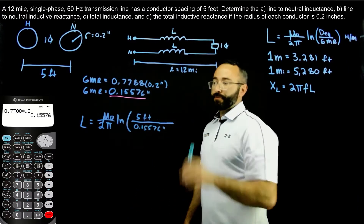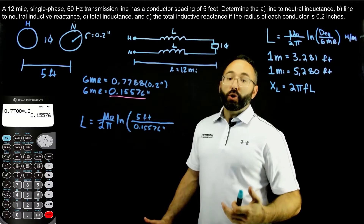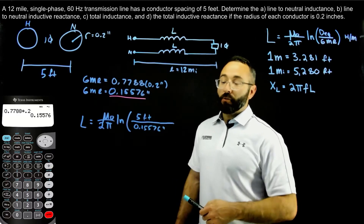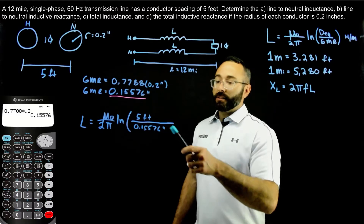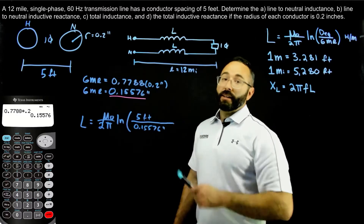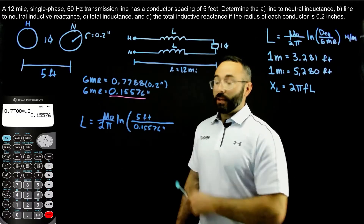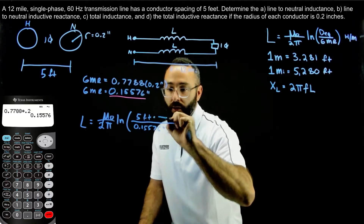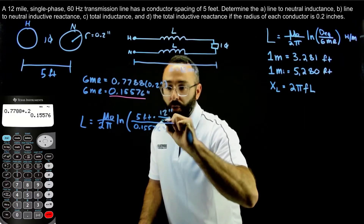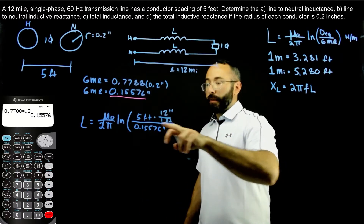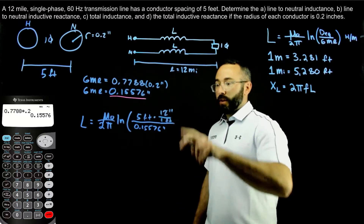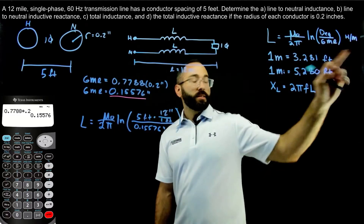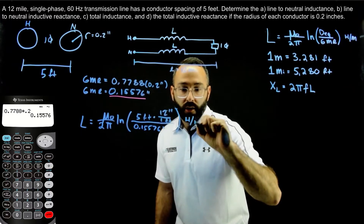Notice there's a ratio here — it's a unitless ratio. So whatever units are on top must match the units on the bottom so they cancel. Because we have feet on top and inches on bottom, we need to convert feet to inches. So I'm going to multiply 5 feet by 12 inches per foot so the feet cancel, leaving inches on both top and bottom. The result will be in units of Henry's per meter.